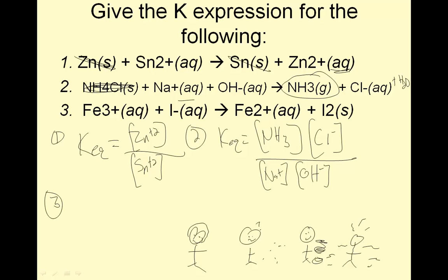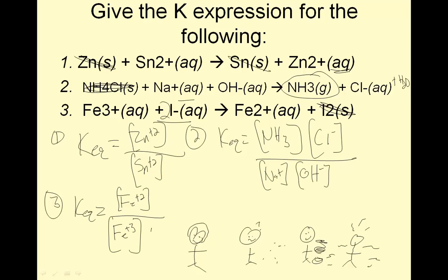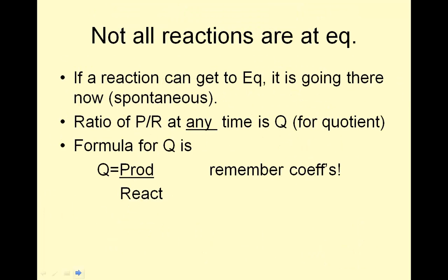Number three: Fe³⁺ plus I⁻ yields Fe²⁺ plus I₂ solid. Balancing this gives a coefficient of 2 on the Fe. Keq equals the products: I₂ is not included because it's a solid. Fe²⁺ is included. Over the reactants: Fe³⁺, and then I negative squared, since the coefficient is 2.